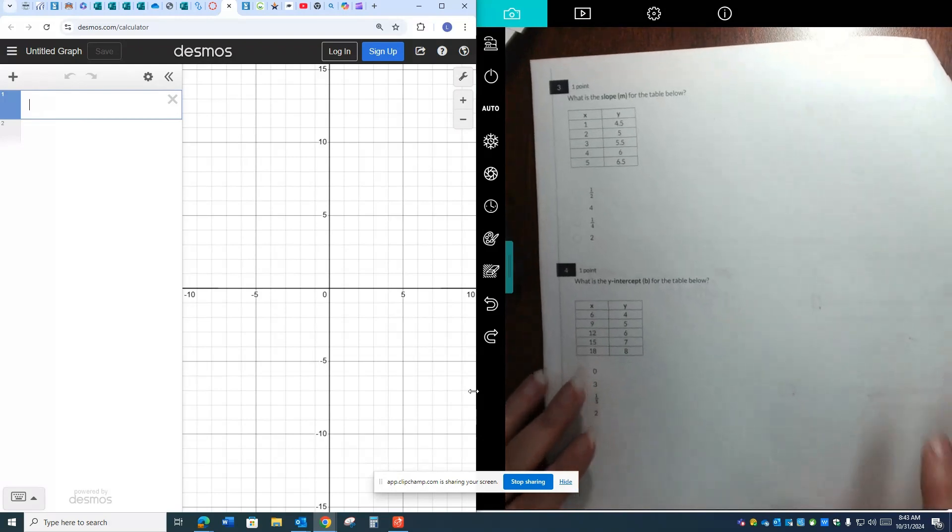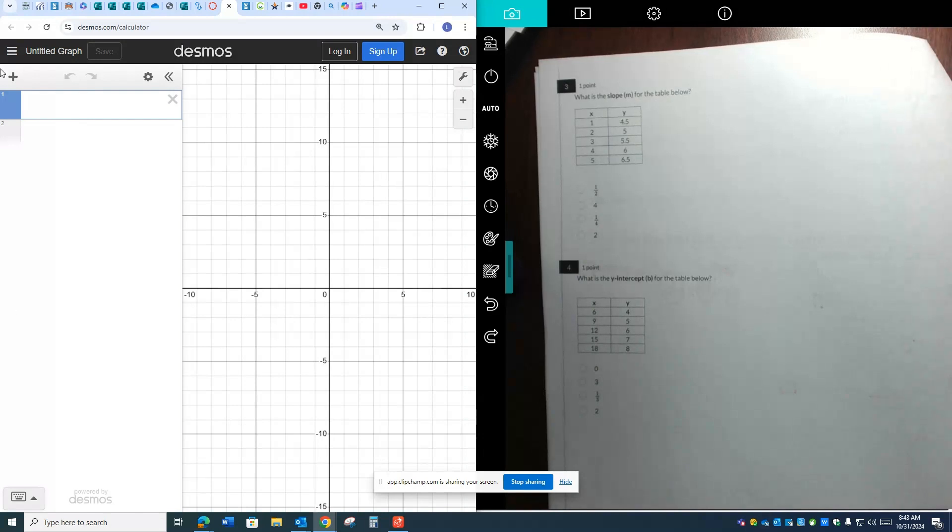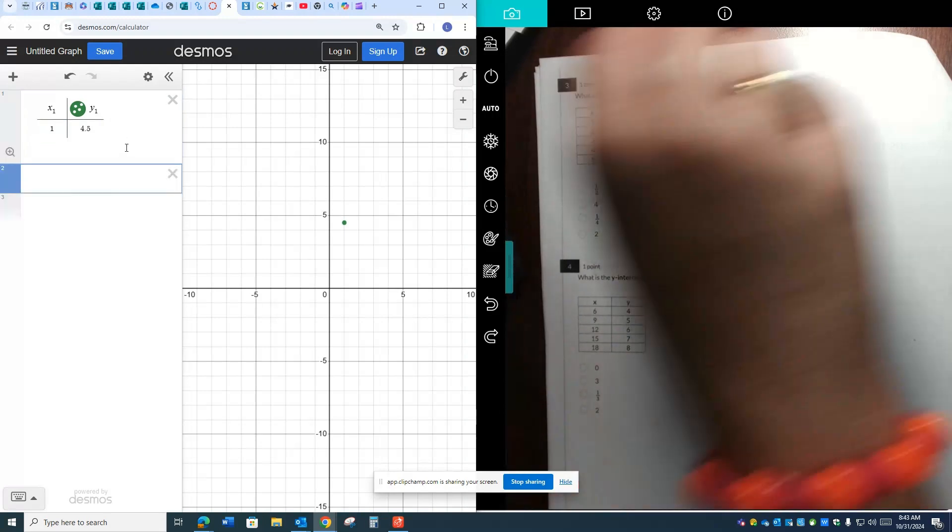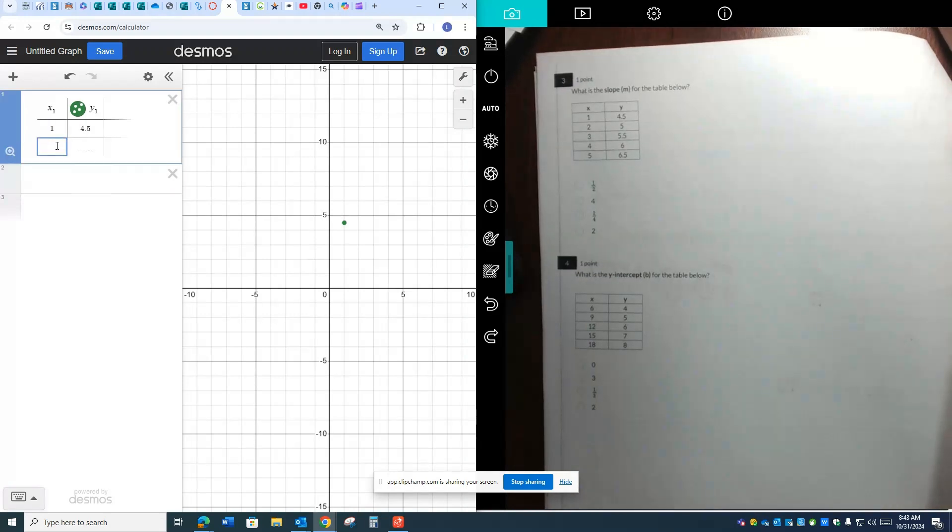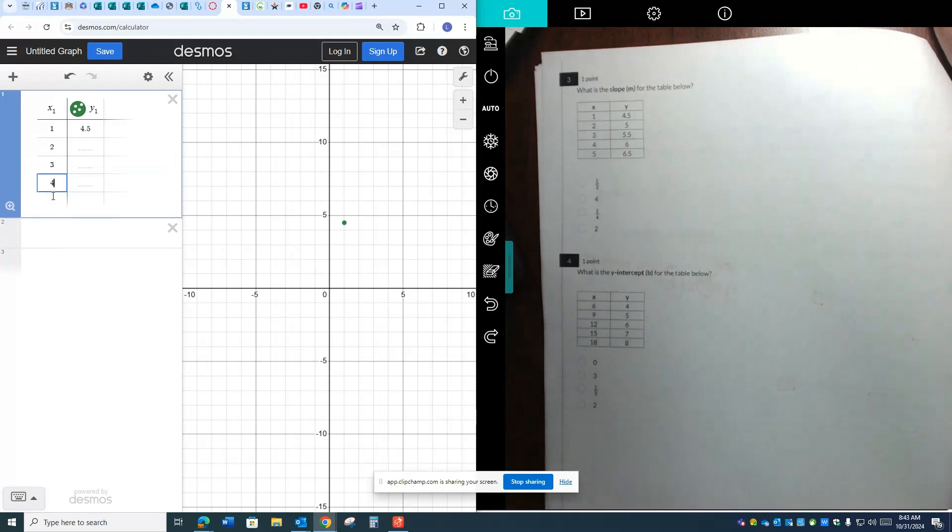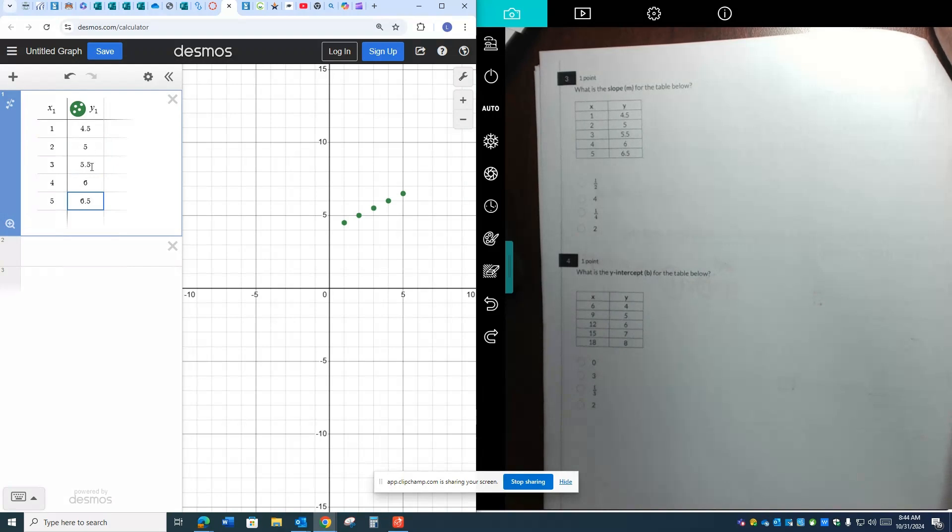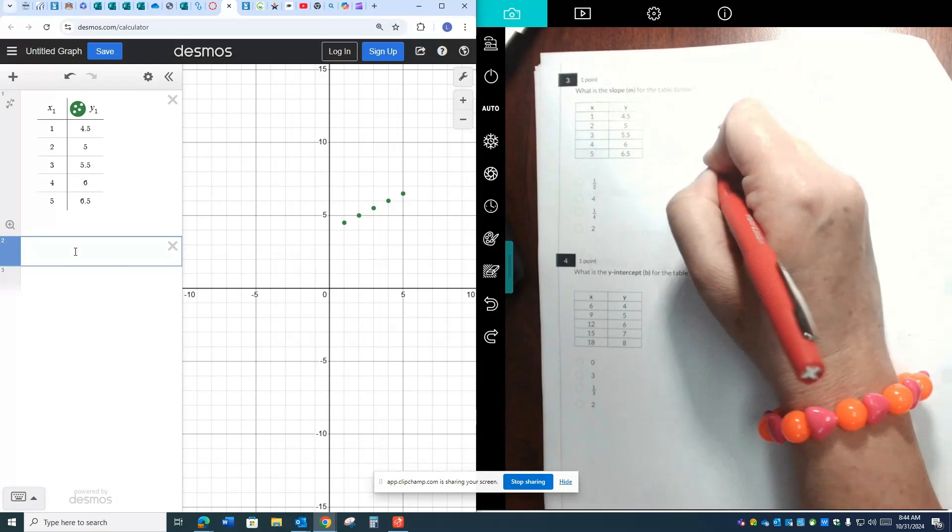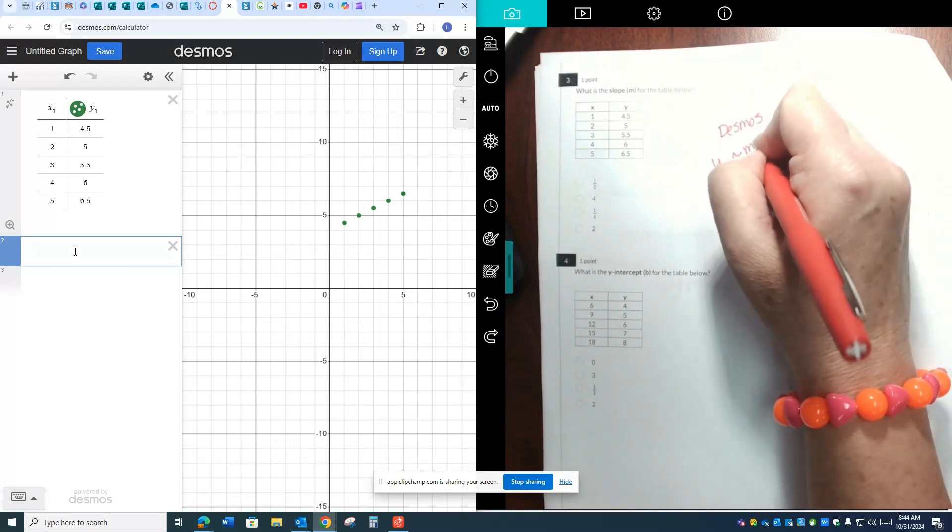Next. It's asking me for the slope. We've been using Desmos to do this. If you remember, we add a table and then we enter the data from this table into Desmos. So I'm going to do 1 with 4.5, and then I'm going to do 2, 3, 4, and 5. And then over here, I'm going to do 5, 5.5, 6, and 6.5. Now you can see that this is going up by 50 cents every time.